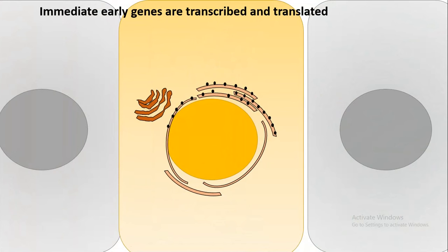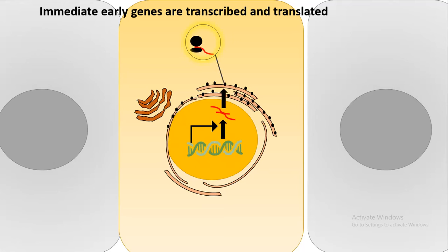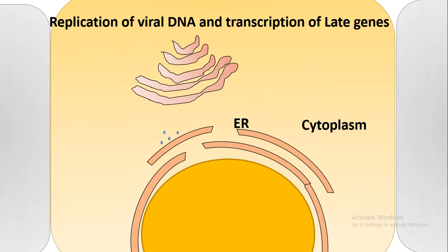Now the genetic material goes inside the nucleus and, using the host machinery, would first transcribe the immediate early genes. These immediate early gene products are then translated in the ER-bound ribosomes. The immediate early gene products have an important function — they help the viral DNA to get replicated.